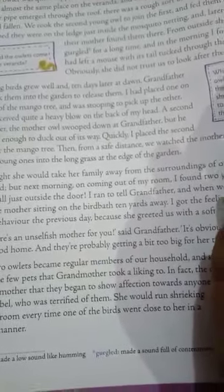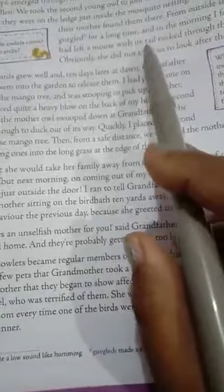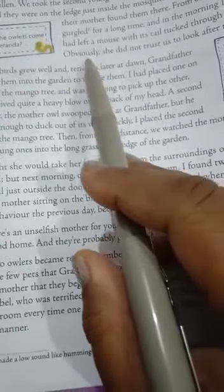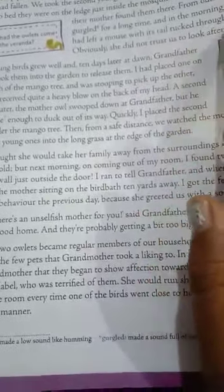And in the morning, I found that she had left a mouse with its tail tucked through the mosquito net. She must have been thinking that my children, they were hungry. So she left a mouse there. Obviously, she did not trust us to look after them. The young birds grew well.